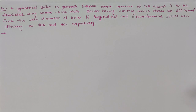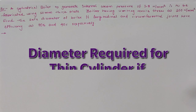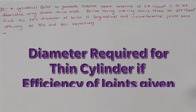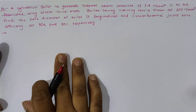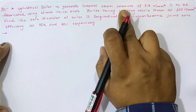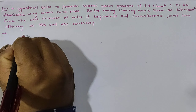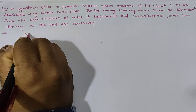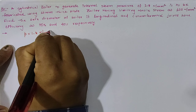Hello friends, today we are going to calculate the diameter required for a given cylindrical boiler having efficiency in terms of longitudinal and circumferential joints. According to the given data, we have pressure given as 1.8 Newton per mm square.